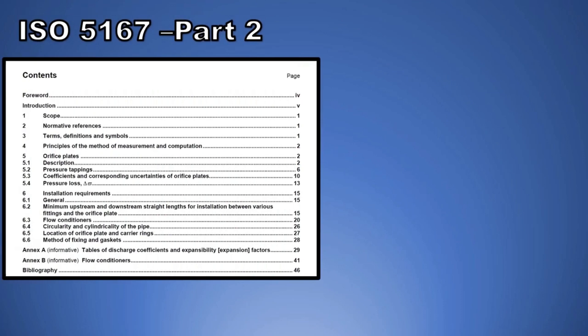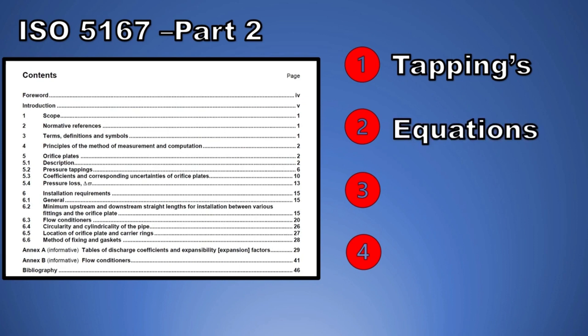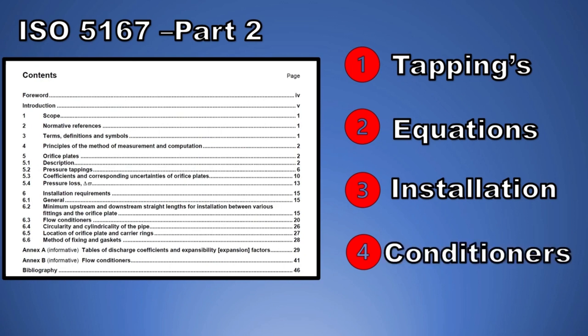Now here is the index of part 2. I would try to just summarize in an easy way by dividing the index into 4 important categories. The first category being the type of tappings which are defined in the standard, for example when to go for corner tappings, flange tappings, D and D/2 tappings, etc. The equations for sizing the orifice. Installation - this is very important. Now we look into this. And then finally the flow conditioners to be used.